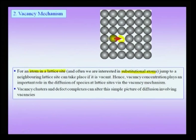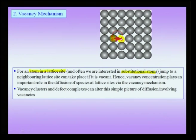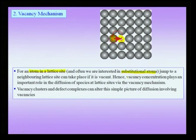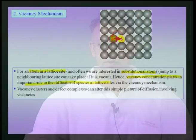After the jump has taken place, site A will become vacant. This implies that vacancy concentration plays a very important role in the diffusion of species at lattice sites via the vacancy mechanism. We are focusing on the vacancy mechanism and the interstitial mechanism; other mechanisms have also been proposed for diffusion, but typically these involve higher activation energies and will not be discussed in this basic elementary course.